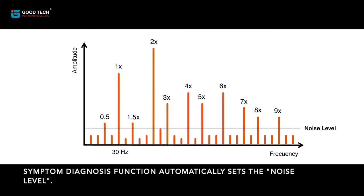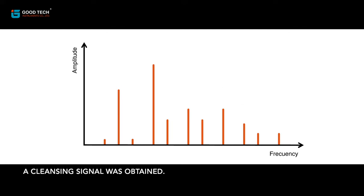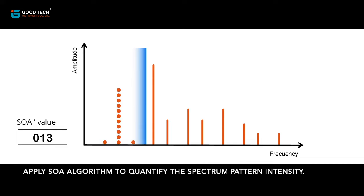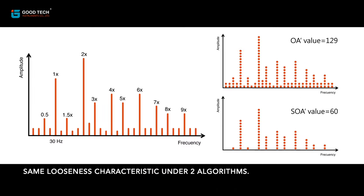Symptom diagnosis function automatically sets the noise level to distinguish the valid signal from environmental and systemic noise. For an SOA value, a cleansing signal was obtained. Apply SOA algorithm to quantify the spectrum pattern intensity. SOA value is 60. Same looseness characteristic under two algorithms.